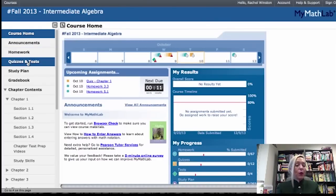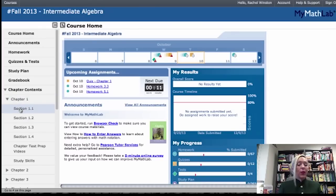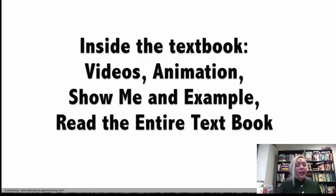And notice I have announcements, homework, quizzes and tests, study plan, grade book, and chapter contents. So, here the entire book, under chapter contents, the entire book is here. So, if I want to log into the book or read the book, I click on chapter one, and let's say I want to go to section 1.1. And I want to view the textbook. So, this is going to log into the multimedia textbook. Inside the textbook, you have videos, animation, show me an example, so it works out an example for you. And you can read the entire textbook on the screen.